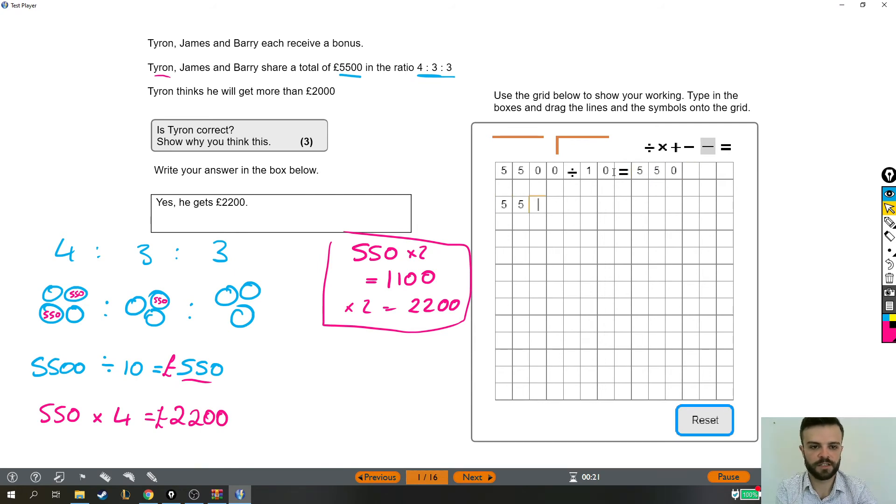We then took that 550 and we timesed it by four. And the answer there was £2,200. And that's how we got our answer. So that's it. That's all the working out we need to show.